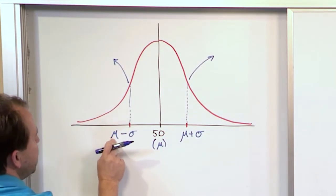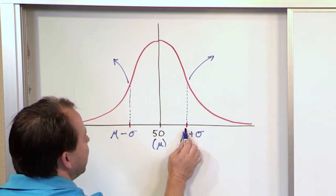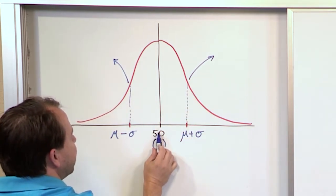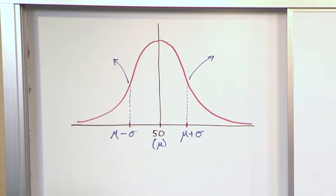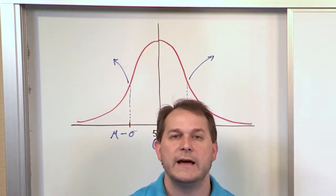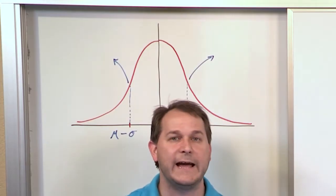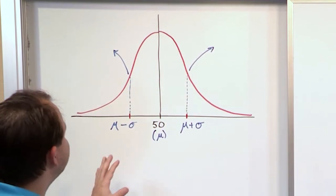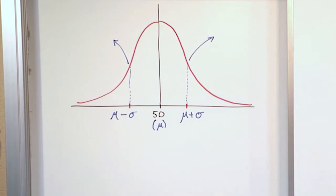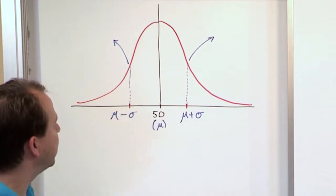The reason we write it as mu minus sigma and mu plus sigma is because this is the mean. If we take the mean and add one standard deviation, we end up here. If we take the mean and subtract a standard deviation, we get this. For these types of distributions, roughly 68% of your data should fall between plus or minus one standard deviation of the mean. It is around 68% to 70% of the data that falls between plus or minus one standard deviation. All the other data is outside of that range.